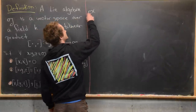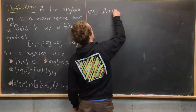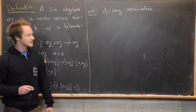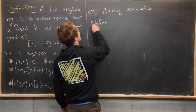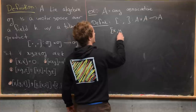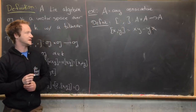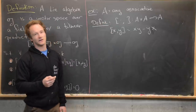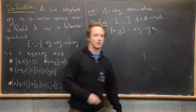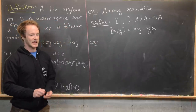The easiest example of a Lie algebra can be built from an associative algebra. Given any associative algebra A — it's more interesting if it's non-commutative — we can define a bracket from A×A to A by [x, y] equals xy minus yx, which is the commutator of the associative product. You can check that this bracket satisfies the Jacobi identity and all the other Lie algebra rules. That's actually a good and not-too-hard exercise.